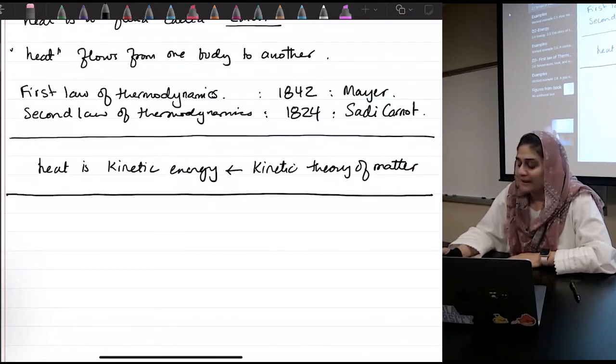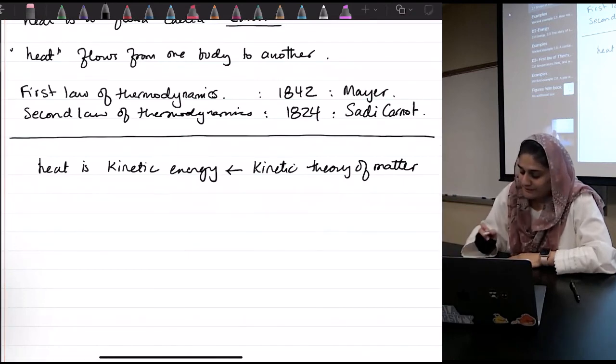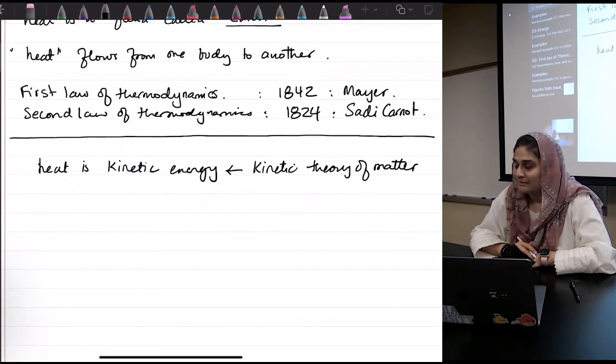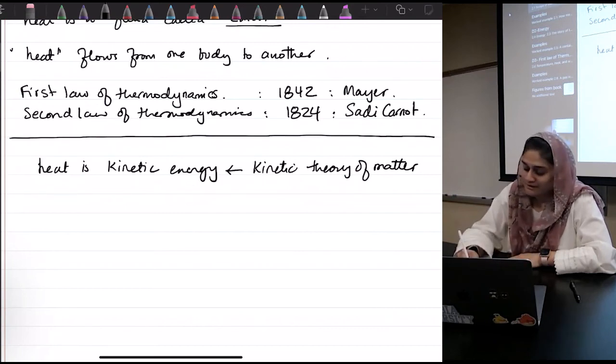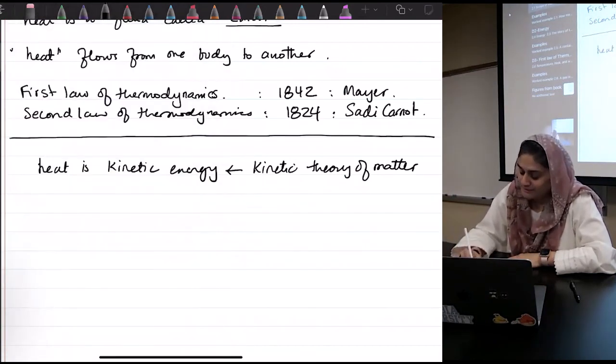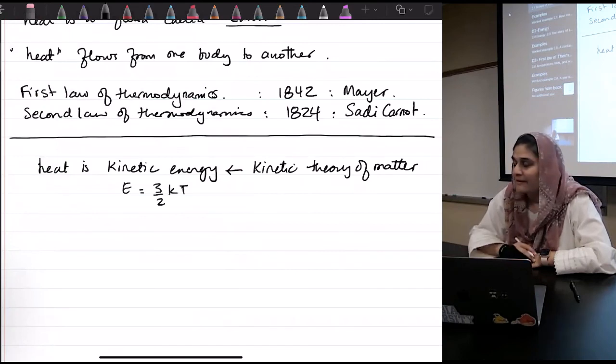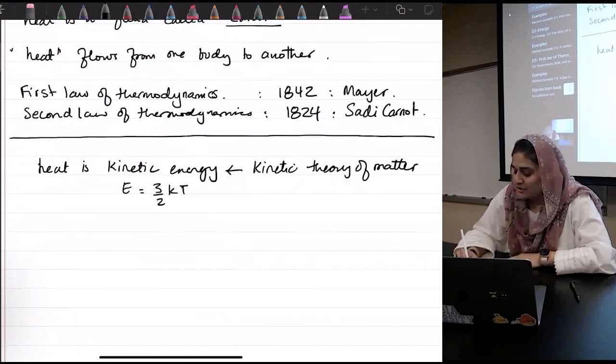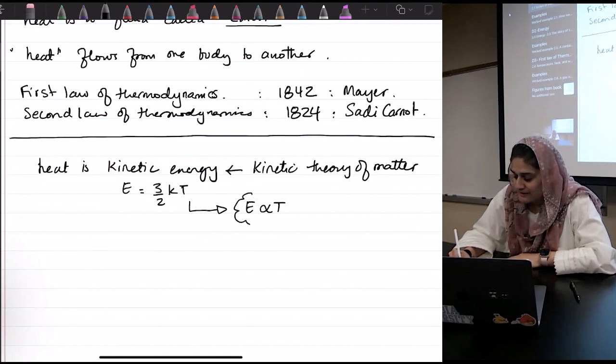And what's the formula? Did you remember the formula? What's the formula for energy in kinetic theory of matter in 3D? Where k is a constant, three-halves is a constant. So can I rewrite this as E is proportional to T?